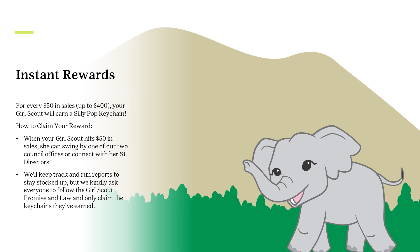Claiming your reward is easy and based on the honor system. Once your Girl Scout has hit the $50 mark, she can swing by one of our two council offices or get in touch with her service unit director, who will be stocked up and ready to help, especially for those in the outlying areas. Just make sure to inform your troop coordinator when you pick up the keychain. This keychain reward is on top of the main reward your Girl Scouts will be earning through the program. We trust everyone to follow the Girl Scout promise and law and claim only the keychains they've truly earned.